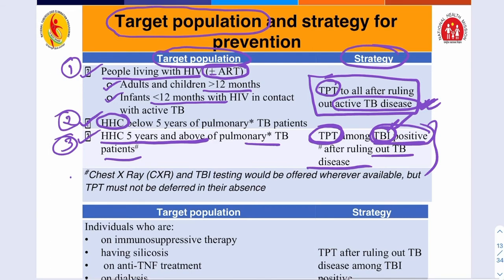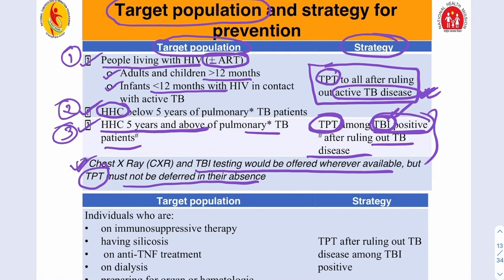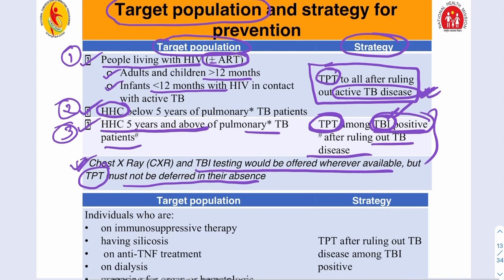Chest X-ray and tuberculosis infection testing should be offered wherever available, but preventive therapy must not be deferred in their absence. If you are unable to do a chest X-ray or testing for tuberculosis infection, patients should not be denied tuberculosis preventive treatment.